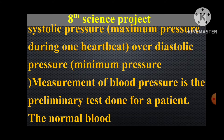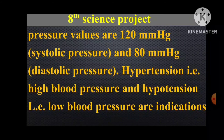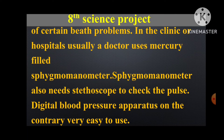Measurement of blood pressure is the preliminary test done for a patient. The normal blood pressure values are 120 mmHg systolic pressure and 80 mmHg diastolic pressure. Hypertension (high blood pressure) and hypotension (low blood pressure) are indications of certain health problems. In clinics or hospitals, a doctor uses a mercury-filled sphygmomanometer, which also needs a stethoscope to check the pulse. A digital blood pressure apparatus, on the other hand, is very easy to use.